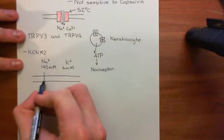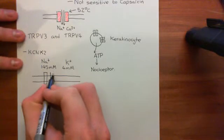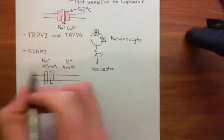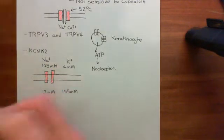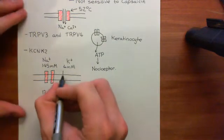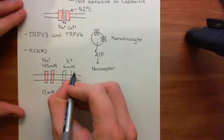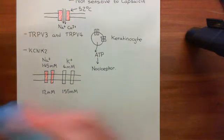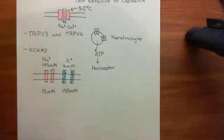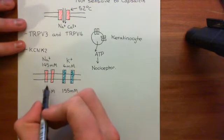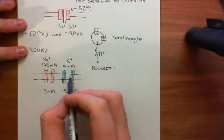We need some leaky sodium channels — sodium channels that are always open. We also have leaky potassium channels, of which KCNK2 is an example — a constitutively open potassium channel. Now what can happen? Sodium ions can move through the sodium channel into the cell, and potassium ions can move out of the cell through the potassium ion channel.